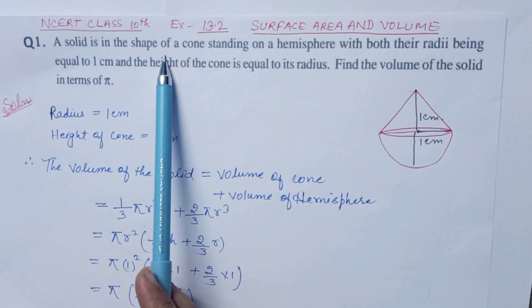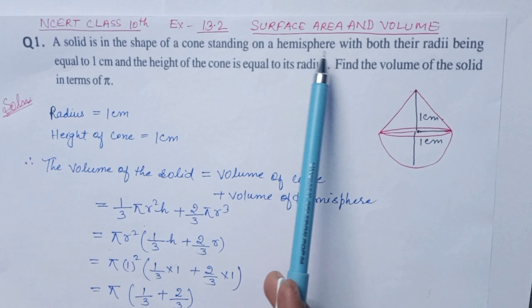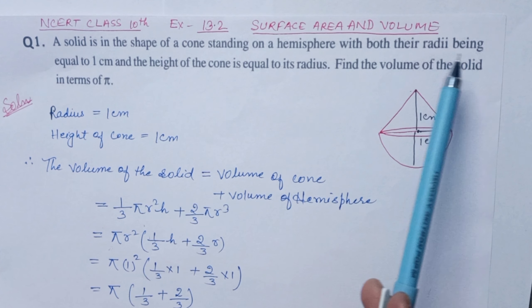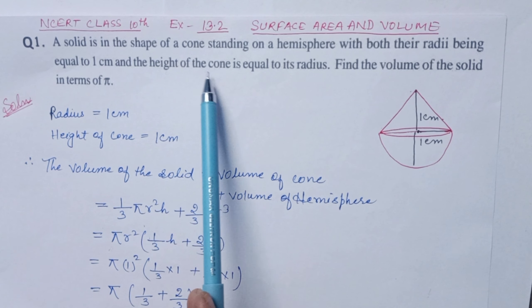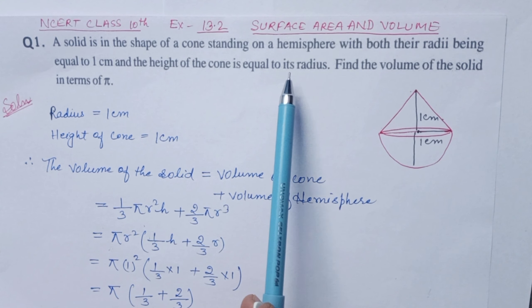A solid is in the shape of a cone standing on a hemisphere with both their radii being equal to one centimeter and the height of the cone is equal to its radius. Find the volume of the solid in terms of pi.